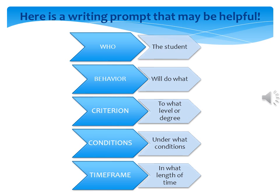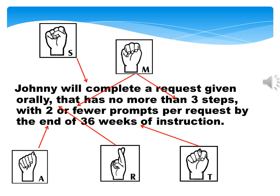Let's start with who — the student. Let's say it's Johnny. Then behavior or skill: will do what — complete a request. Then criterion, referring to measurable — to what level or degree — with no more than two prompts per request. Then conditions, referring to achievable — under what conditions — given orally, has no more than three steps. And then timeframe, referring to time-bound — in what length of time — by the end of 36 weeks of instruction. So our goal would be: Johnny will complete a request, given orally, that has no more than three steps, with two or fewer prompts per request, by the end of 36 weeks of instruction. Notice the S-M-A-R-T.